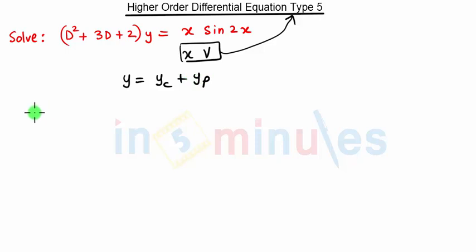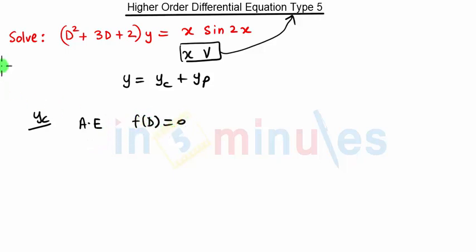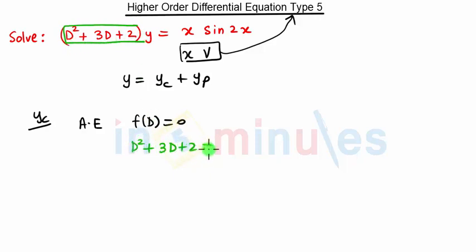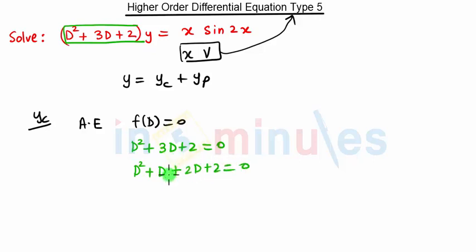First we will find Y_C. To find Y_C we need an auxiliary equation. The auxiliary equation is F of D equal to 0. F of D is nothing but D squared plus 3D plus 2 equal to 0. Now we are going to split the middle term, so we get D squared plus D plus 2D plus 2.